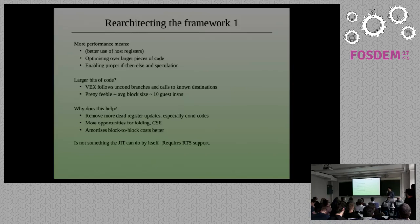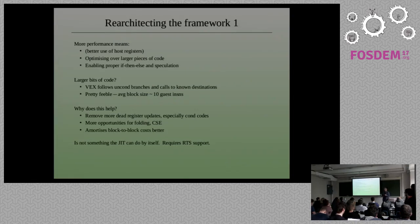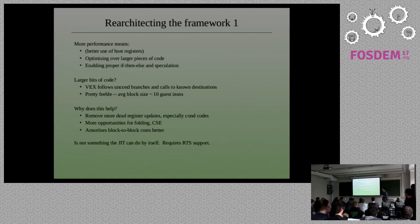So I want to move to some proposals for how to move forward — what can we do to improve performance? We talked about improving the use of registers. In dynamic instrumentation and compilation systems in general there are basically two tricks: one is to deal with larger pieces of code. Here we're dealing with very small blocks of machine code — 8, 10, 12 instructions on average — even though VEX does try to follow branches through the machine code when it can.